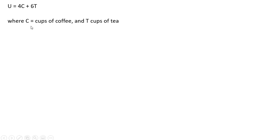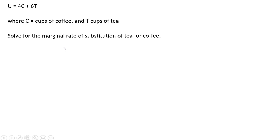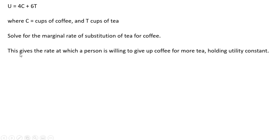Utility equals 4C plus 6T, where C is cups of coffee and T represents cups of tea. We want to solve for the marginal rate of substitution of tea for coffee. This marginal rate of substitution gives a rate at which a person is willing to give up coffee for more tea, holding utility constant.